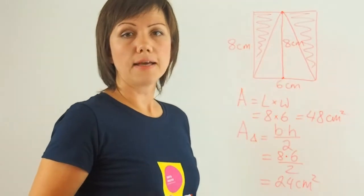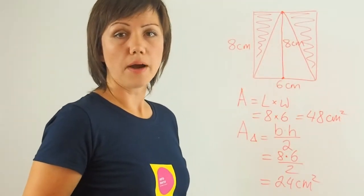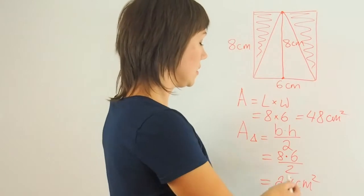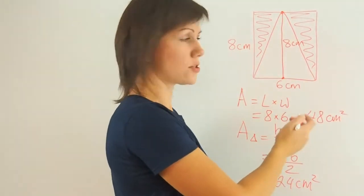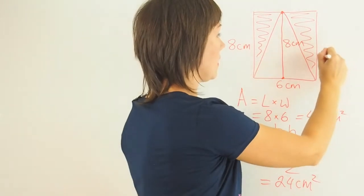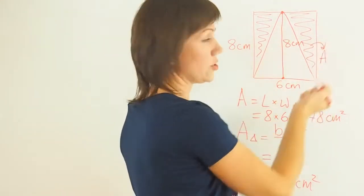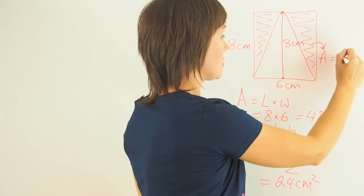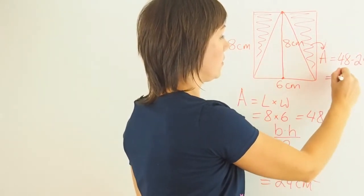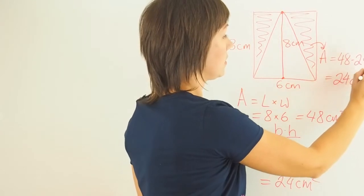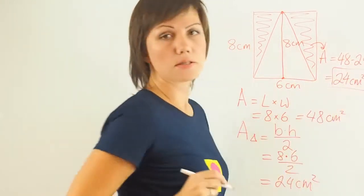So to get the area of the shaded part, I need to subtract 24 centimeters squared from 48 centimeters squared. Area of the shaded part is 48 subtract 24, which is 24 centimeters squared.